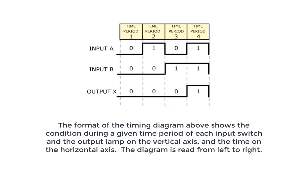The format of the timing diagram shows the condition during a given time period of each input switch and the output lamp on the vertical axis and the time on the horizontal axis. The diagram is read from left to right.